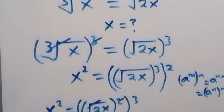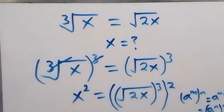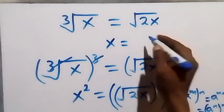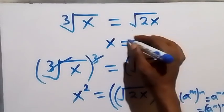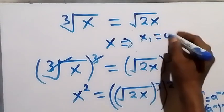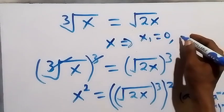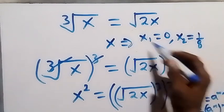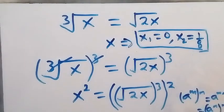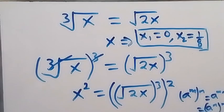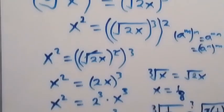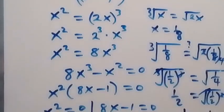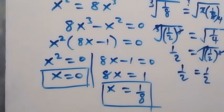So the solutions we found are x₁ equals 0 and x₂ equals 1 over 8. Thank you for watching. Don't forget to subscribe for more exciting videos, turn the notification bell on, share this video, put your comments in the comment section, and give it a thumbs up. See you in the next class!